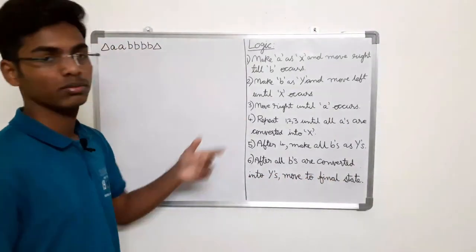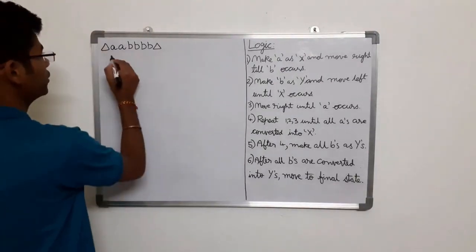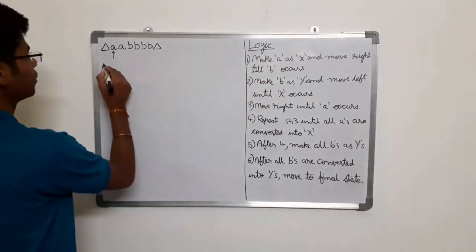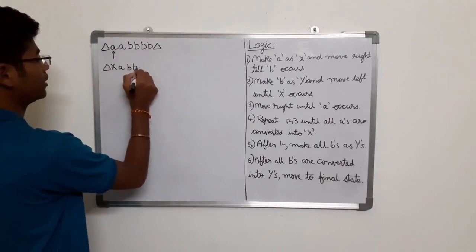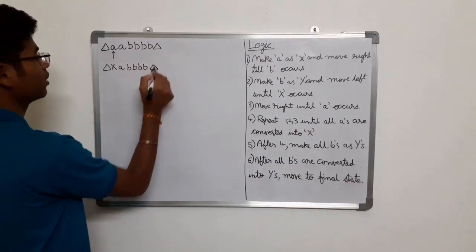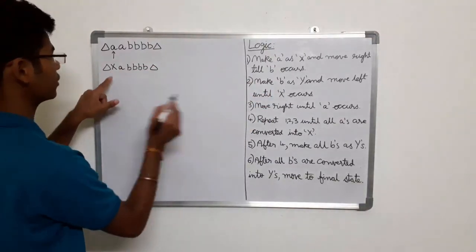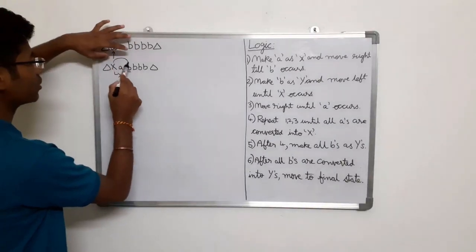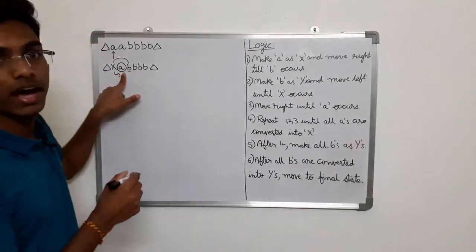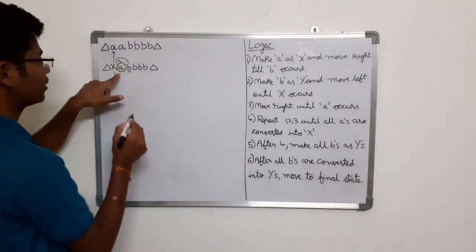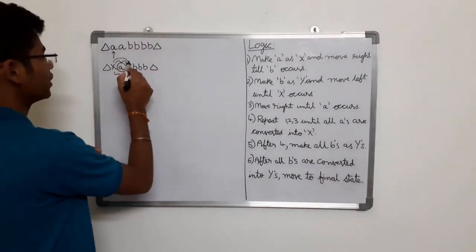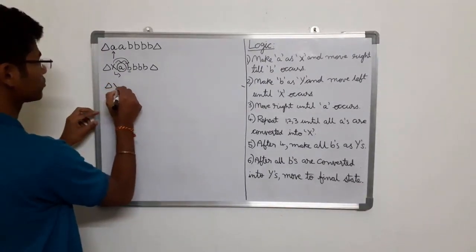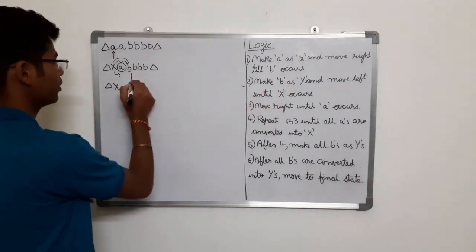Now let me explain this logic. Initially our string is 'a a b b b b' and we are at the first position. Implementing the first step: make 'a' as X — let us make this as X and write the remaining string as it is. There are four b's. We have made the first 'a' as X, and now move right till small 'b' occurs. There is nothing to do with the remaining small 'a', so keep it as it is and move towards right. Once you find small 'b', implement step two: make this 'b' as Y.